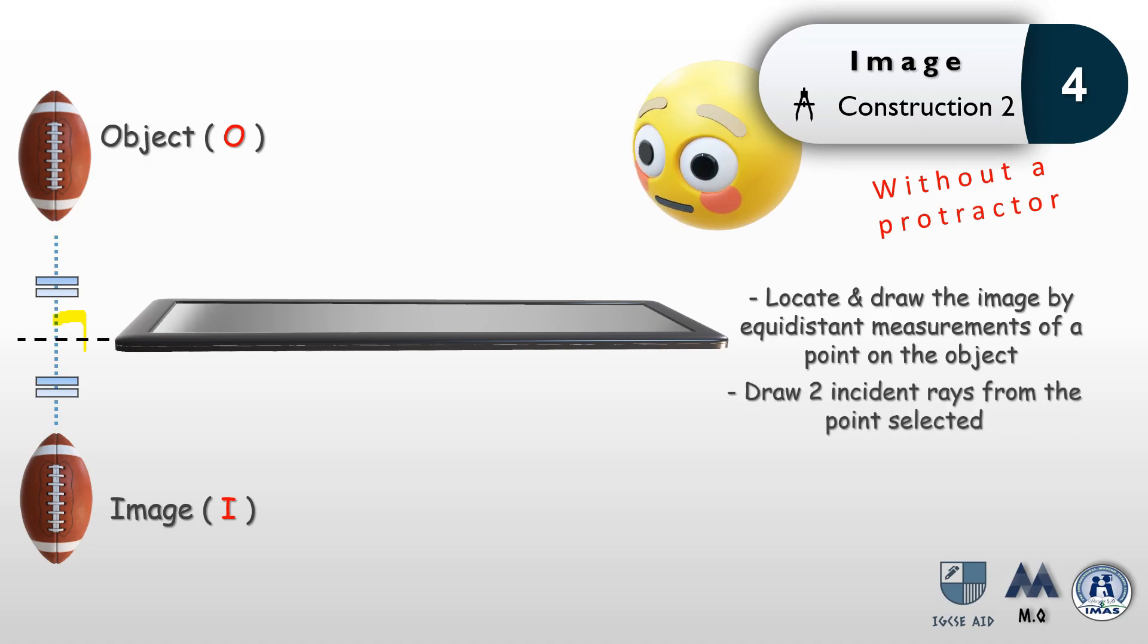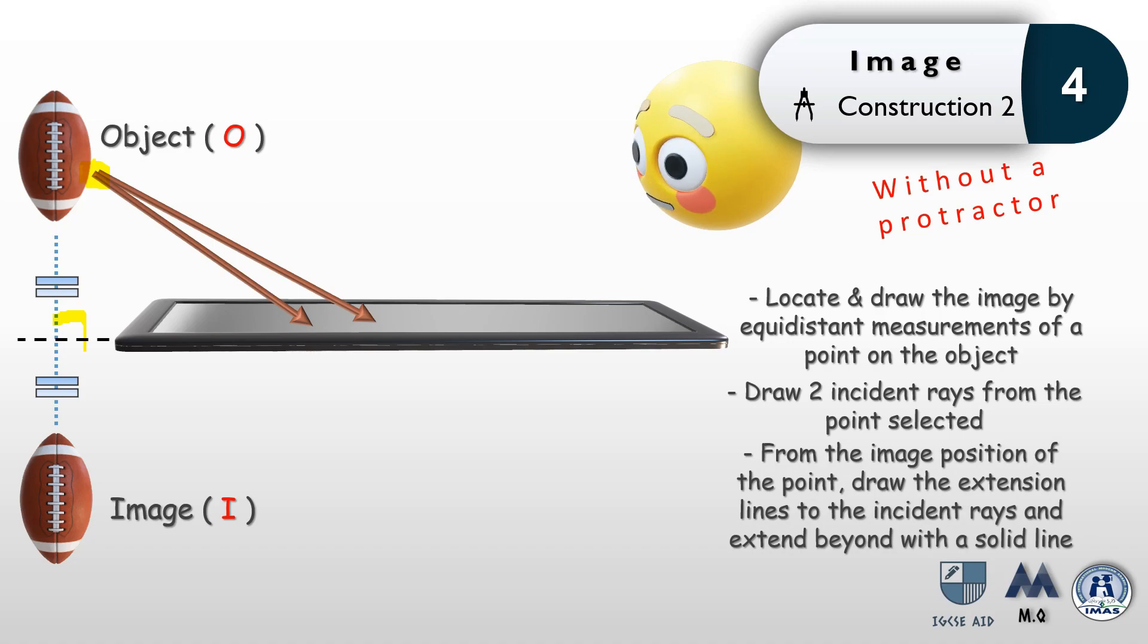Next, you need to draw two incident rays from any point selected on the object. This is the point selected, and from this point two rays are drawn towards the mirror in any direction. The third step: from the image position of the point you selected—remember, equidistant—we need to draw extension lines towards the incident ray, and then we extend them beyond with a solid line as shown.